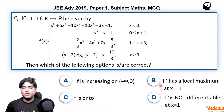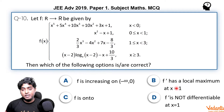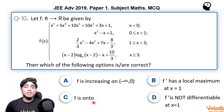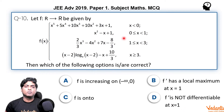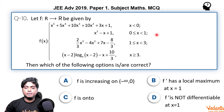Option A: f is increasing on (−∞, 0). Option B: f' has a local maximum at x = 1. To check local maxima/minima of f', we need f''. Option C: f is onto. The codomain given is R so we need to check if the range is R. Option D: f' is not differentiable at x = 1. This will also be verified using second derivative values.